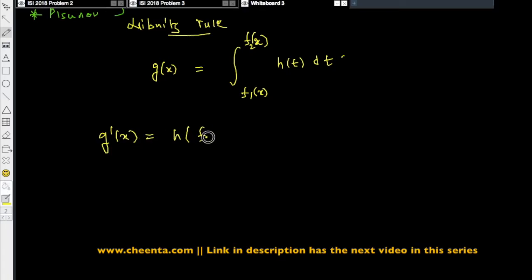Then you just do h of f2(x) times f2 prime x minus h of f1(x) times f1 prime x.